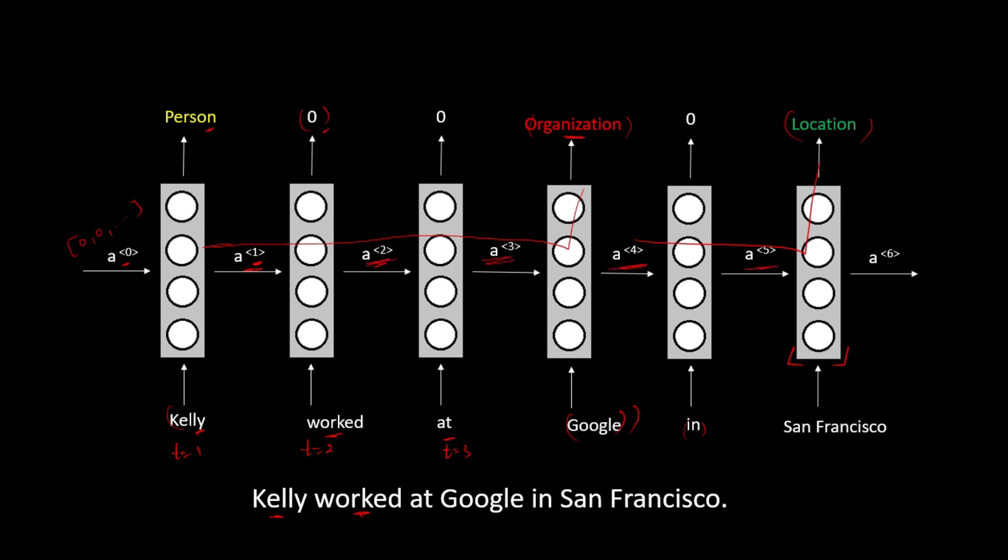So if we use an architecture like this, we can create any natural language processing application. Now here we only discussed an application which has the same output length as the input length, which means that the output size was same as the input size.